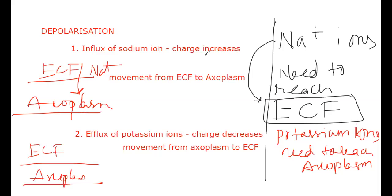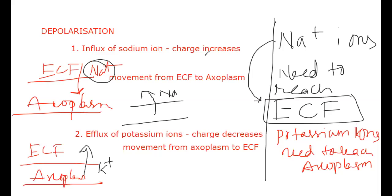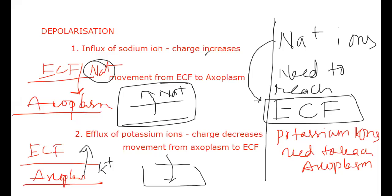Potassium ions are going to exit outside. There is a place change — sodium ions reach the axoplasm, potassium ions reach the ECF. So back again, what is required: sodium needs to go back — back means going outside. Potassium needs to come inside, to their respective original place. To understand this, you need to understand sodium and potassium ions in their respective positions.